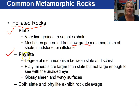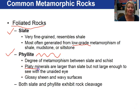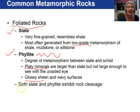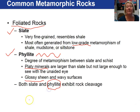A phyllite can be distinguished from a slate by its foliation being wavy instead of flat. We still have the mica and platy minerals, and you still cannot see the grains without magnification. They are a little bit larger than in a slate, so you get a shiny appearance to a phyllite when compared to a slate. Technically both slate and phyllite exhibit rock cleavage. I actually like to use the term phyllitic texture for the phyllites.